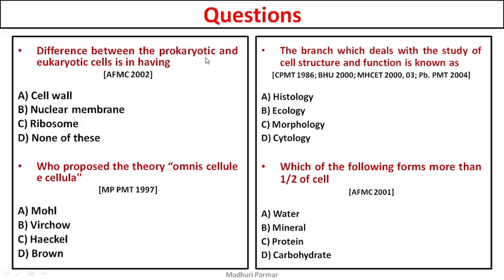The difference between prokaryotic and eukaryotic cells is in having: cell wall, nuclear membrane, ribosome, or none of these? The answer is nuclear membrane. Nuclear membrane is only seen in eukaryotic cells; it is absent in prokaryotic cells.